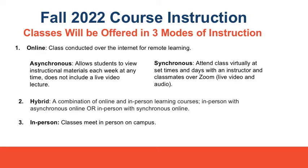Online classes are separated into two types of courses: number one, asynchronous; number two, synchronous. Asynchronous courses allow students to view instructional material each week at any time. This does not include a live video lecture. Asynchronous courses heavily rely on online discussion and timely homework submission. Students are required to follow the deadlines provided by the professor on the syllabus.